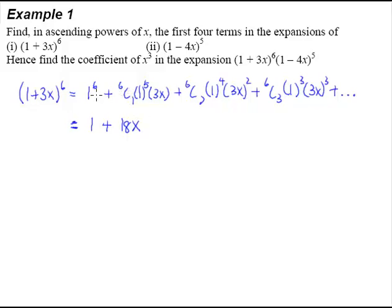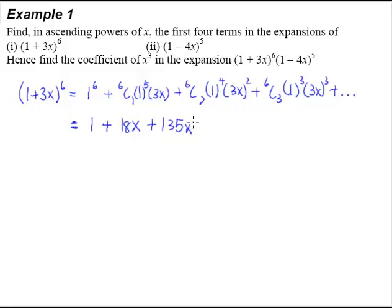For the third term, 6C2 — you really have to use a calculator on this because it may not be so easy to calculate mentally. From the calculator, 6C2 is 15. 15 multiplied by 3 squared, which is 9, gives us 135. So this will be 135x².